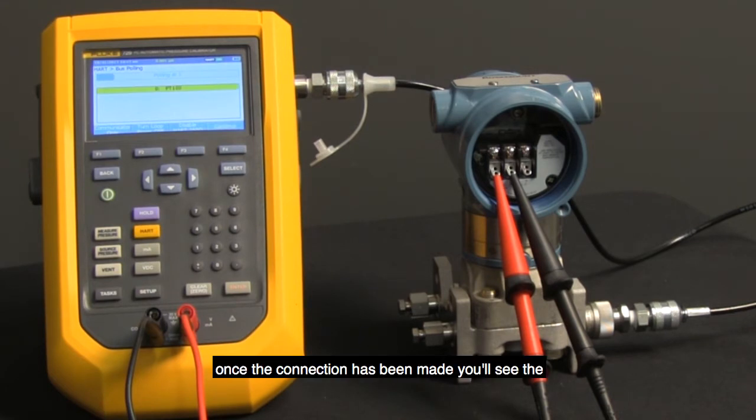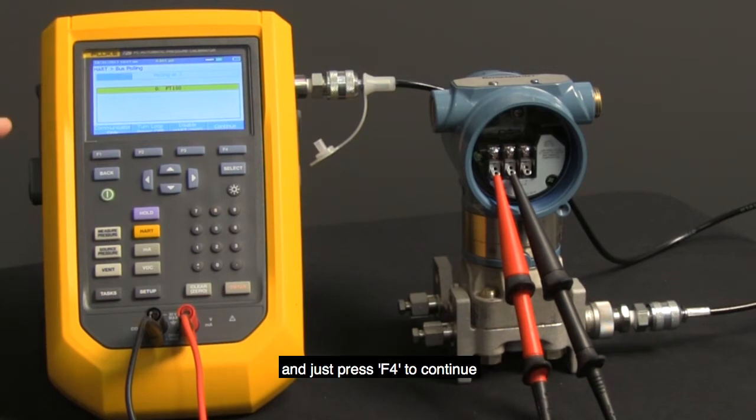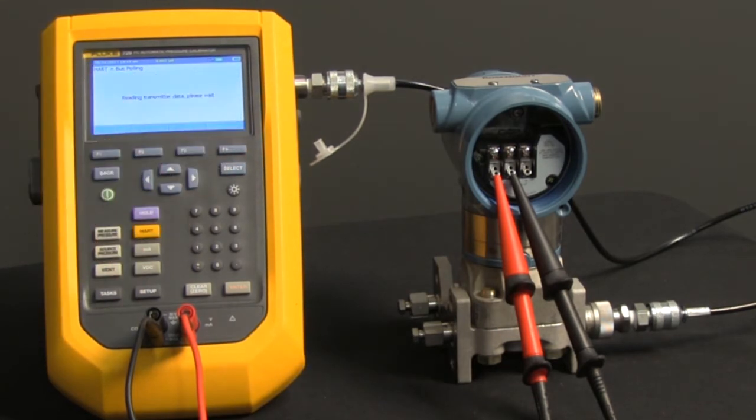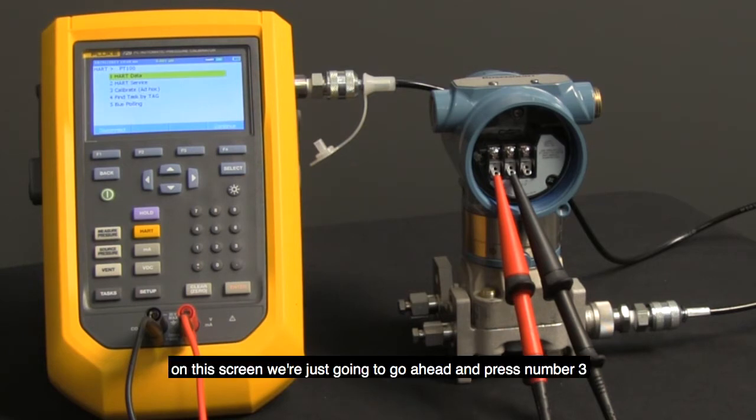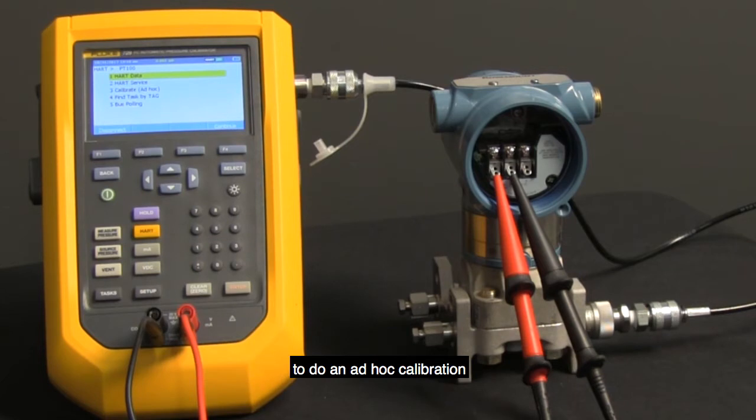Once the connection has been made, you'll see the device ID name, tag ID name of the device, and just press F4 to continue. Now the 729 is reading the information off the transmitter. On this screen, we're just going to press number three to do an ad hoc calibration.